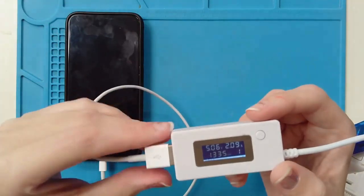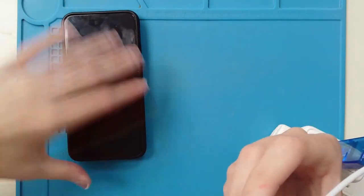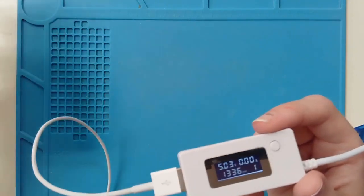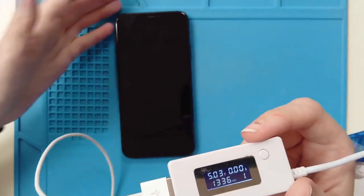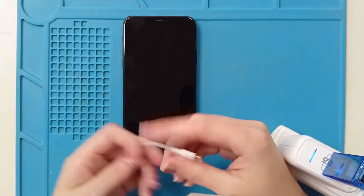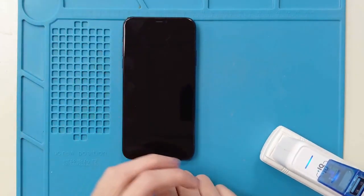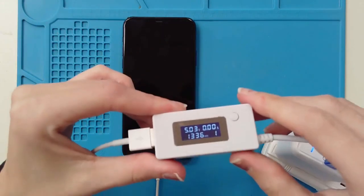We're going to go ahead and turn this off. I'm going to disconnect. So as you can see, a phone is going to pull in more amperage when it is in use, but it's going to still pull in amps even if it is off as long as the charge port is functioning.